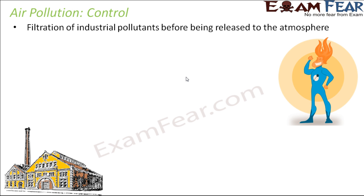One thing that we can do is filtration of industrial pollutants before being released into the atmosphere. Industrial emission is one of the major causes of air pollution because industries release a lot of harmful substances into the atmosphere. What we can do is — all those substances which come out of industries, before they come out into the atmosphere, they should be filtered inside, so that more toxic substances can be converted into less toxic substances and then those less toxic substances are released into the atmosphere. That way, the harmful effects will be reduced.